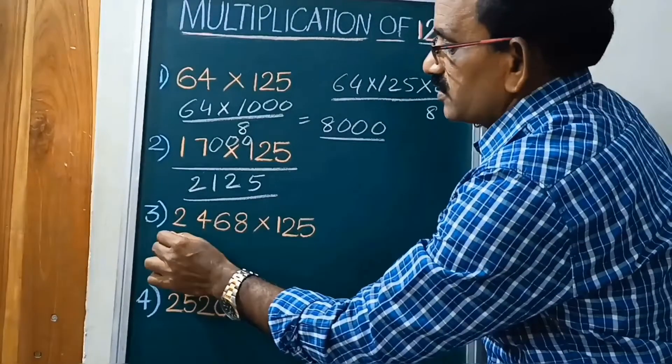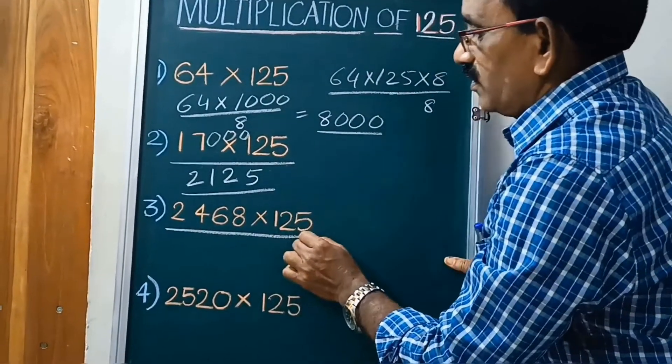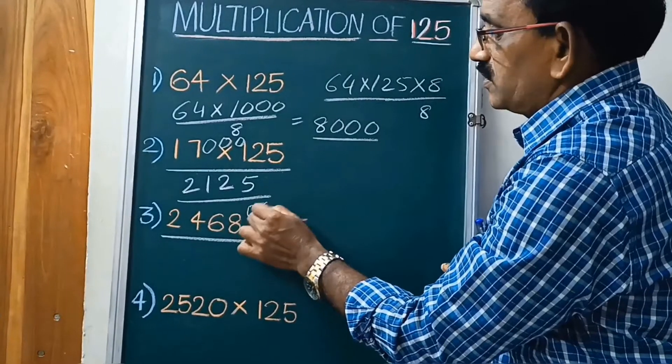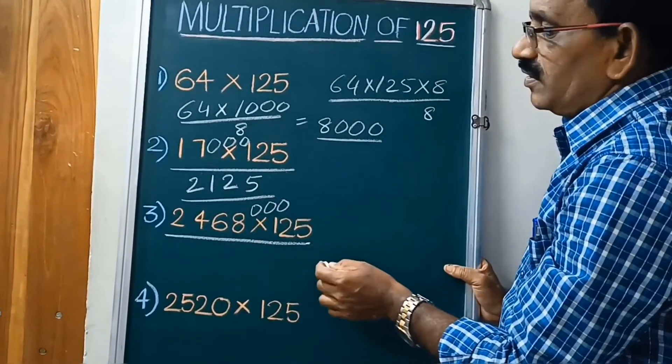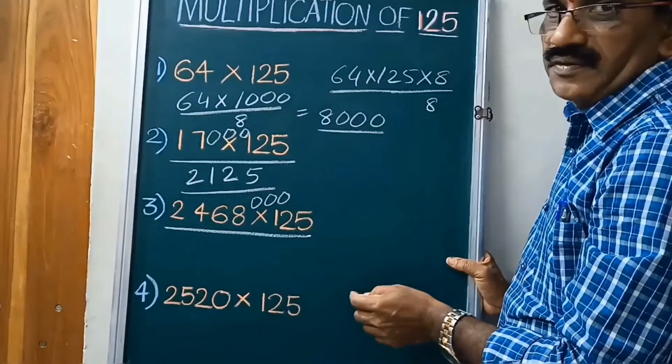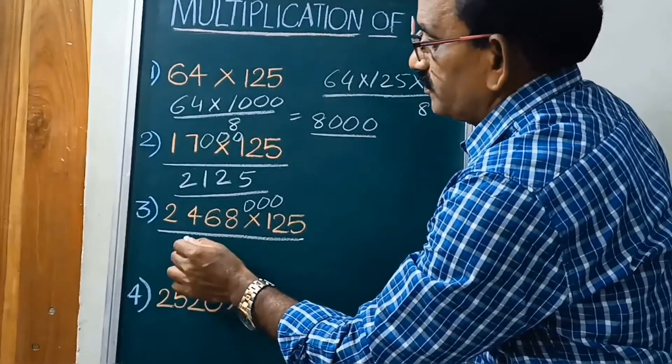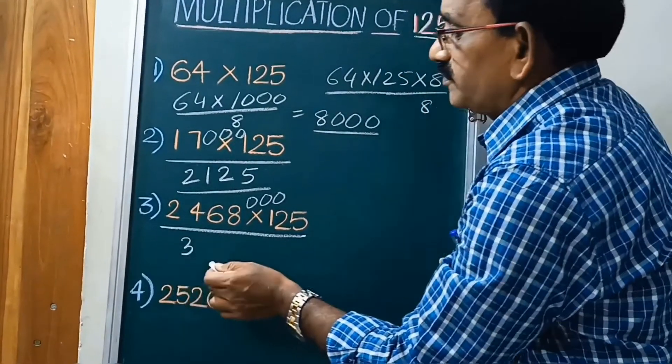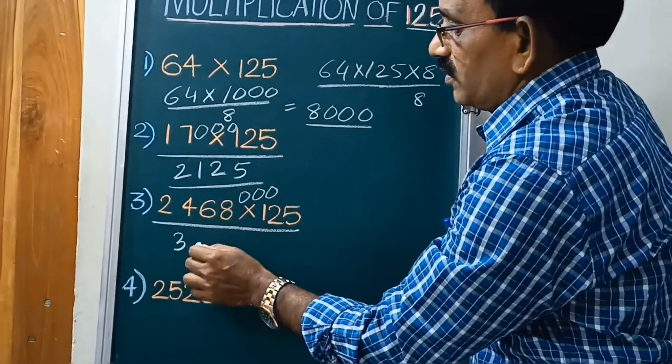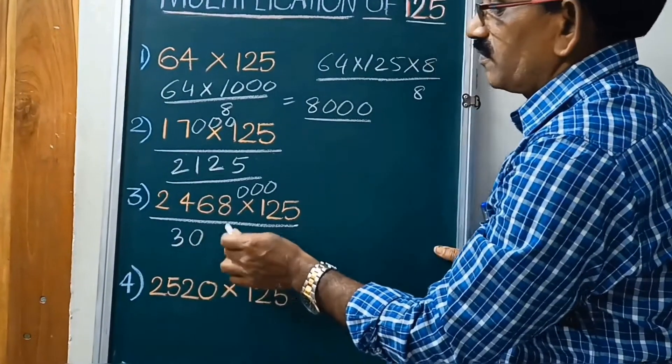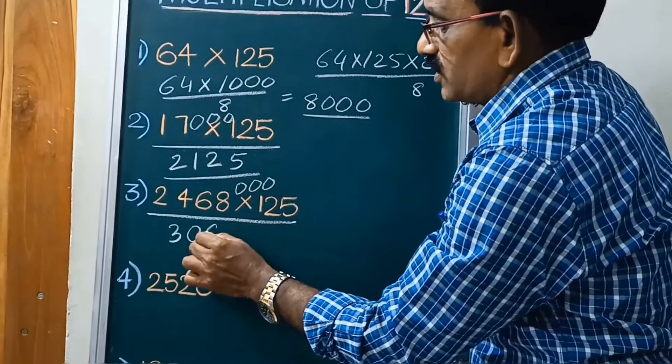Next same as, put it 3 zeros. 2468 into 125, divided by 8. The answer is 8 divided by 8. 8 threes are 24. 8 eights are 64.